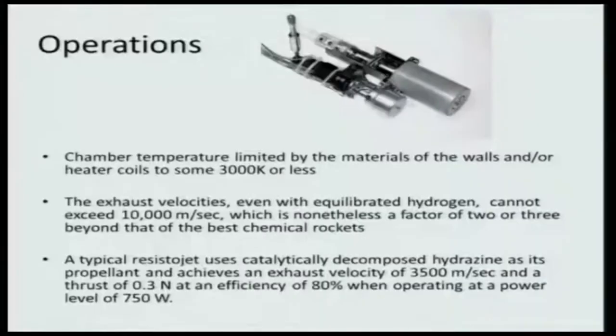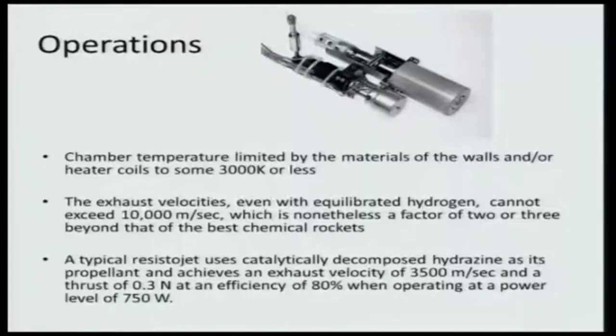Resistor jets can be heated up to 1000 degrees Celsius, with chamber temperature limited by wall material and heater coil to about 3000 degrees Kelvin. Without chemical heating, you are producing about 3000 K. The exhaust velocity with equilibrated hydrogen is about 10,000 meters per second — a factor of 2 or 3 beyond the best chemical rockets, which give about 4800 to 5000 m/s. A typical resistor jet uses catalytically decomposed hydrogen, achieves an exhaust velocity of 3500 m/s, a thrust of about 0.3 Newton, with an efficiency of 80 percent at a power level of only 750 watts.